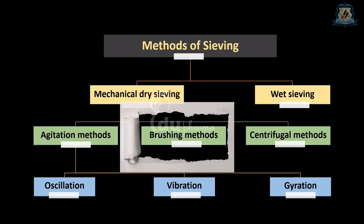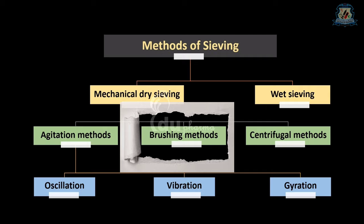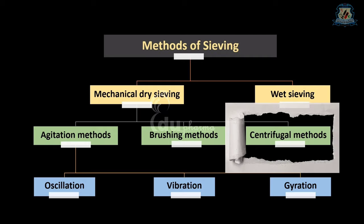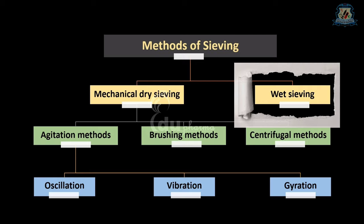Another dry sieve method is the brushing method. In this method, a brush is used to move the particles on the surface of the sieve and keep the meshes clear. Next is the centrifugal method. Mechanical sieves of this type normally use a vertical cylindrical sieve with a high-speed rotor inside the cylinder so that particles are thrown outwards by centrifugal force.